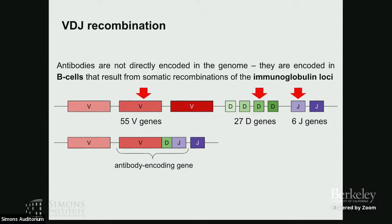In all other cells, immunoglobulin loci contain a family of V genes — where V stands for variable — D genes where D stands for diversity, and J genes where J stands for joining. In B cells, these immunoglobulin loci are affected by a special process called VDJ recombination, which randomly selects one gene from each of those families and concatenates them together, producing a gene encoding one antibody chain, called a VDJ sequence.